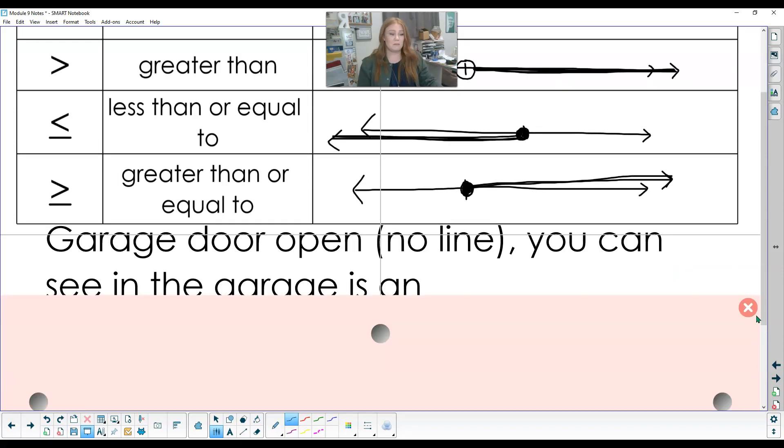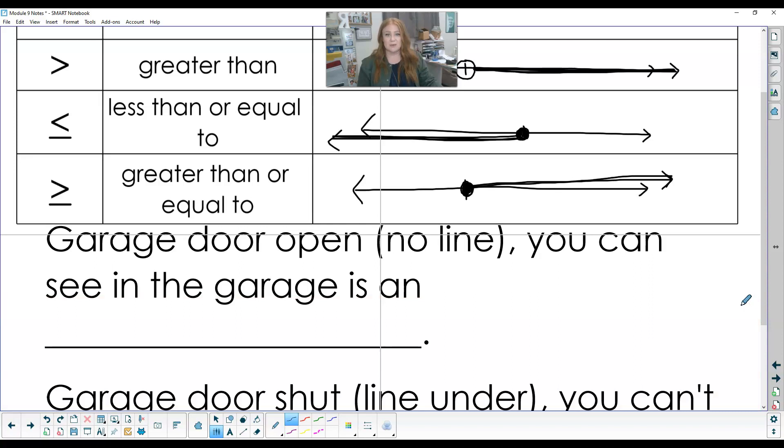So one other little trick, maybe this one will stick with you. So a garage door. Think about your garage door and it's open. So this little line here, if I have this, this is like our garage door. So if it's open, when it's open, you can't see the garage door shut at the bottom. So here's the door shut. Here's the door open. It went up and I can't see it anymore.